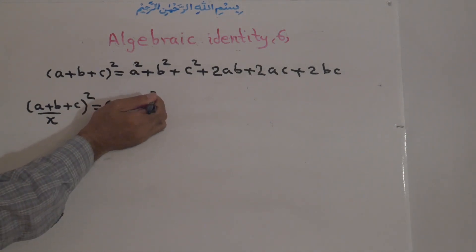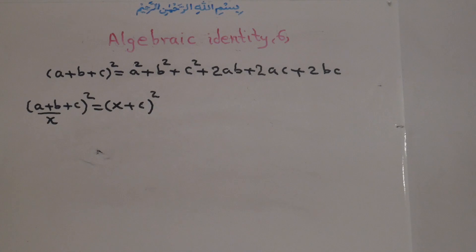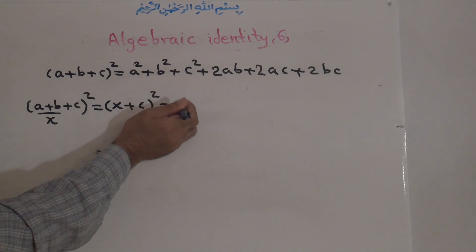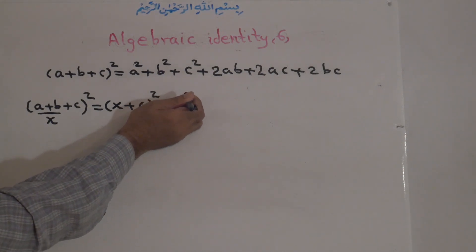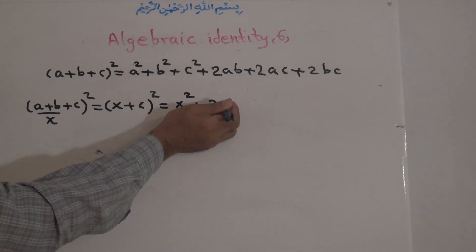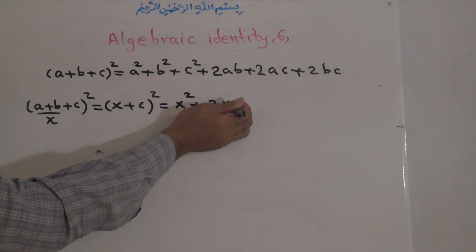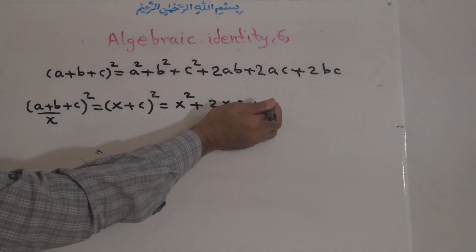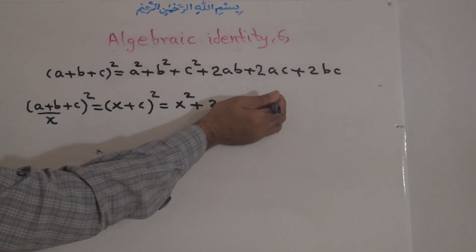This one is like Identity Number 1, that is A plus B squared, which is equal to A to the power of 2 plus 2AB plus B to the power of 2. So now it is equal to x to the power of 2 plus 2xC plus C to the power of 2.